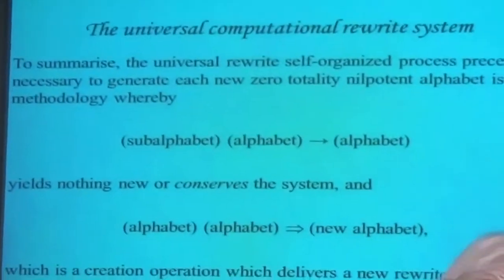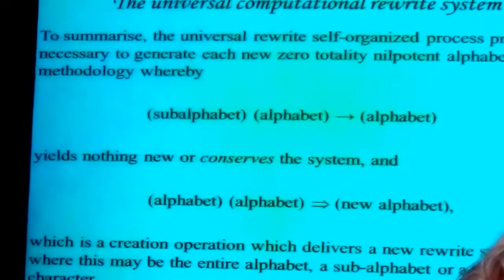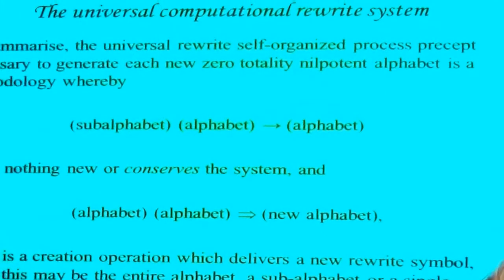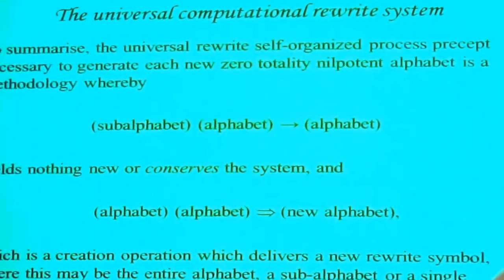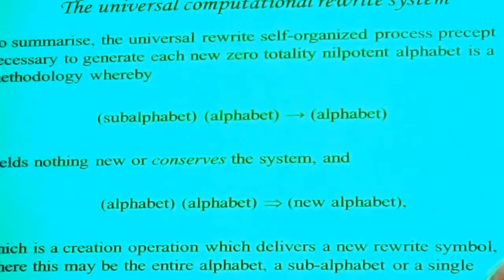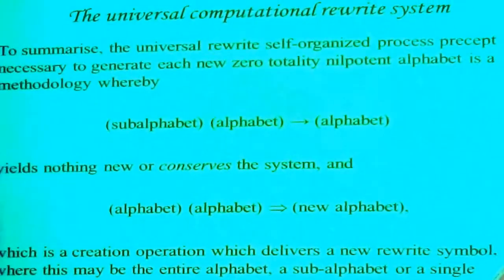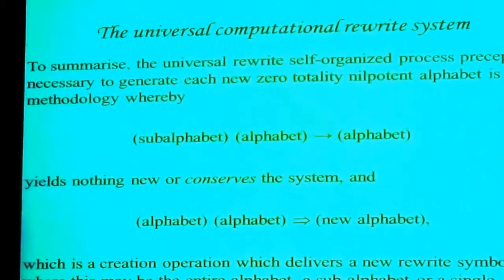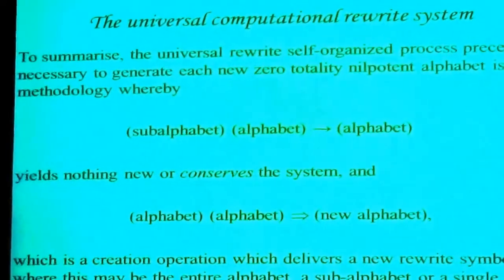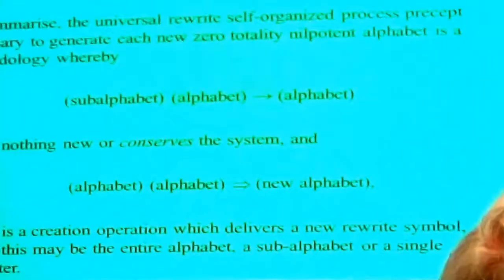This is where we get into the applications of this system that we have talked about in the previous talk. This is the summary of what we said: the universal rewrite self-organized process generates new totality zero, nilpotent alphabets. Sub-alphabet becomes alphabet — nothing new — alphabet, alphabet, new alphabet.